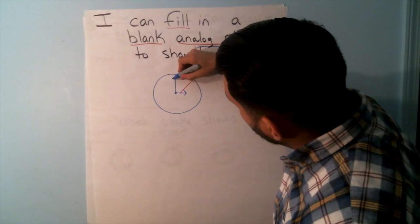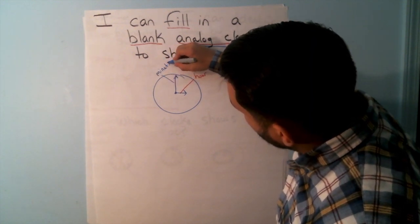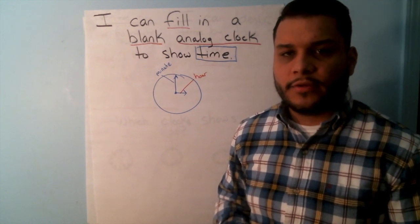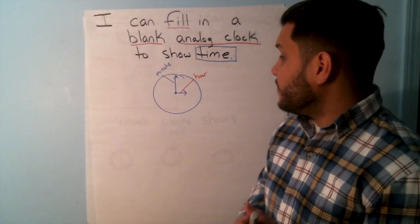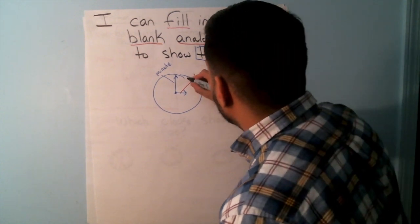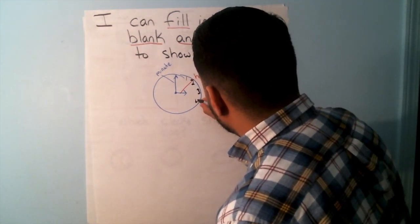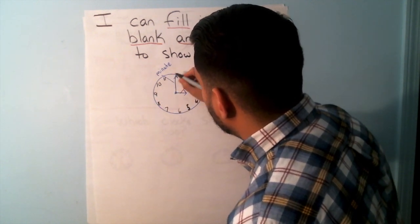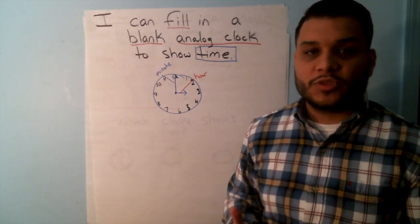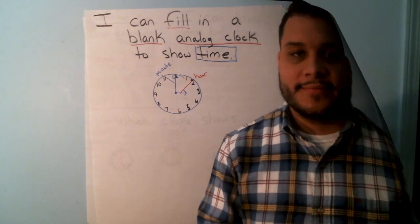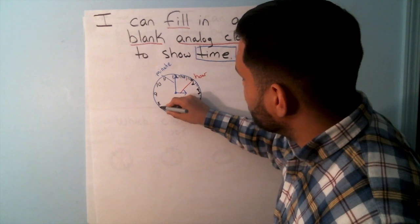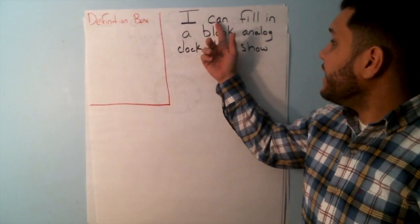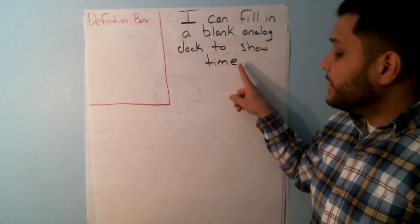We have our hour hand and our minute hand. We also said that an analog clock has a certain amount of numbers. How many numbers does an analog clock have? Yes — 12! So if I was to fill this in, we always start counting by the number 1: 1, 2, 3, 4, 5, 6, 7, 8, 9, 10, 11, and 12. Awesome job! And it also has 60 lines.